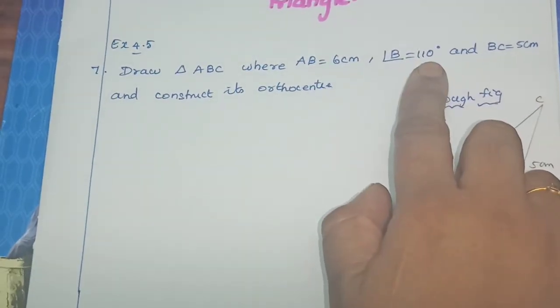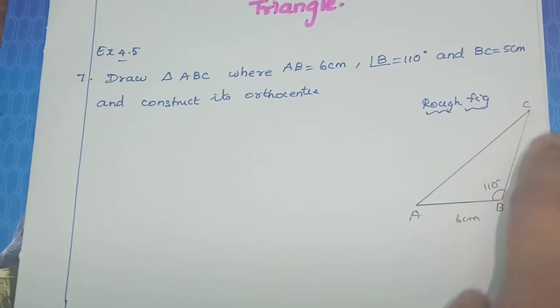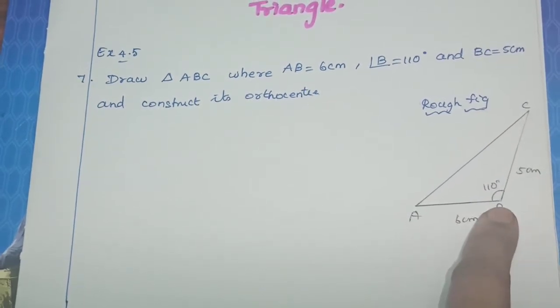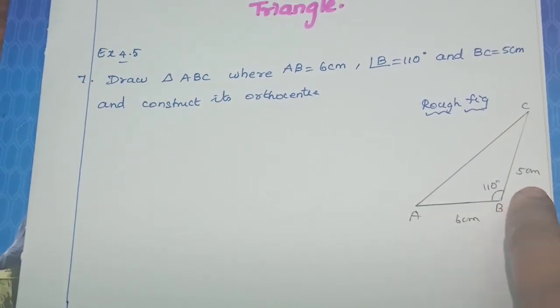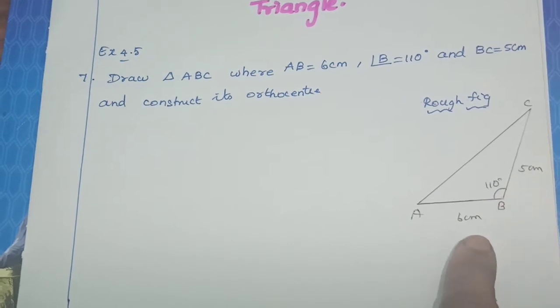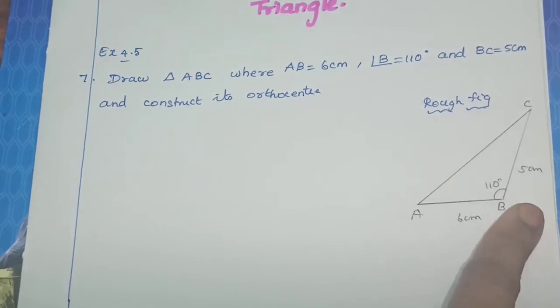So it's an obtuse angle triangle. I have drawn a rough figure here: base is 6 cm, angle B is 110 degrees, and BC is 5 cm. Here, in the case of obtuse angle triangle, the orthocenter lies outside the triangle. So we are going to construct now how it is going to be outside the triangle.